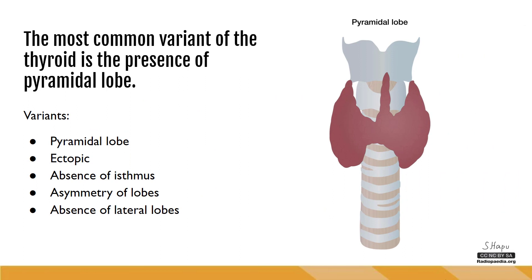The most common variant of the thyroid is the presence of a pyramidal lobe, which affects about 10 to 40 percent of the population. It is a triangular piece of parenchyma that extends from the isthmus towards the chin, and while it can arise from any part of the isthmus, it is most commonly seen towards the left side. Other variants include ectopic thyroid tissue commonly seen underneath the tongue, the absence of an isthmus, asymmetry of the lobes where one lobe is larger, or the absence of one of the lateral lobes.